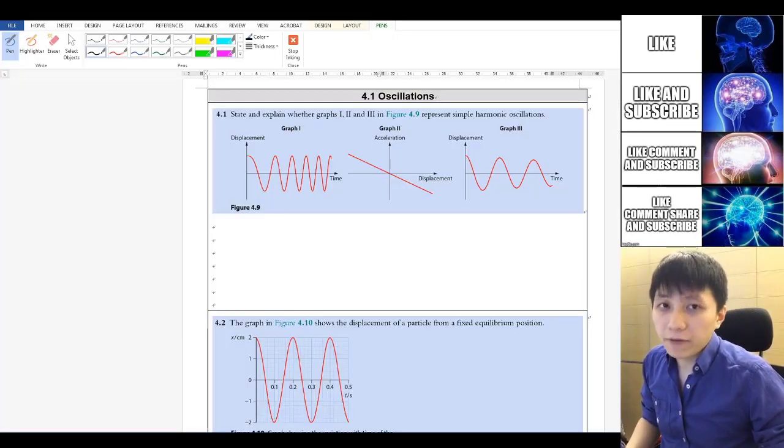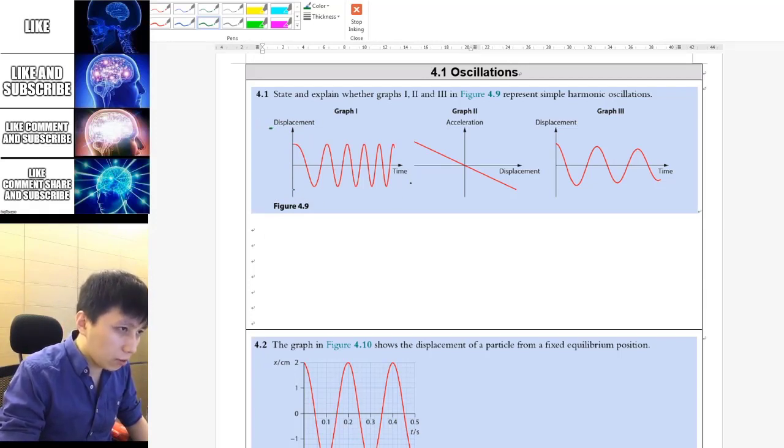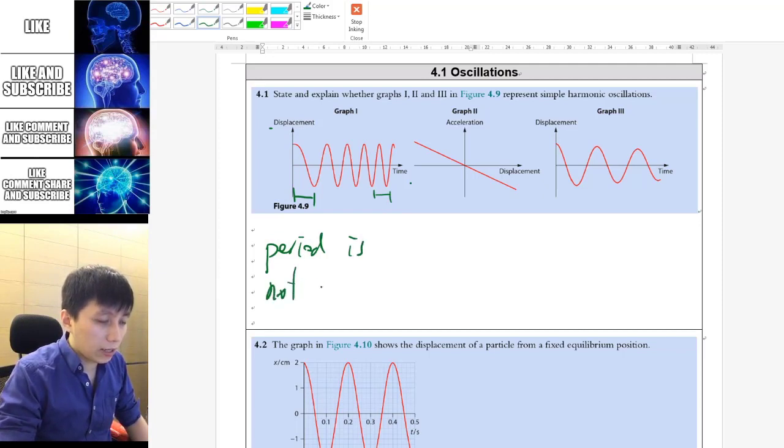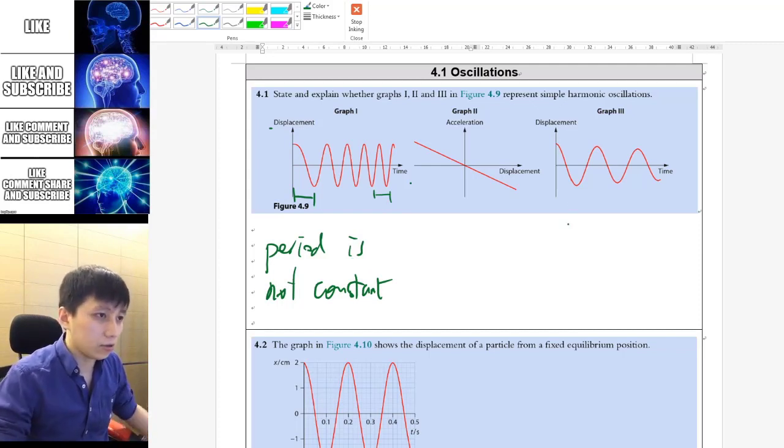I think you're good to go now, so please pause the video and try out this question. A few moments later. Okay, the first graph you can see this is a displacement time graph, and if you try to look at the period, you can see it is not being constant. So this is the reason that you can reject the idea that it is being SHM. So the answer is not SHM for sure.